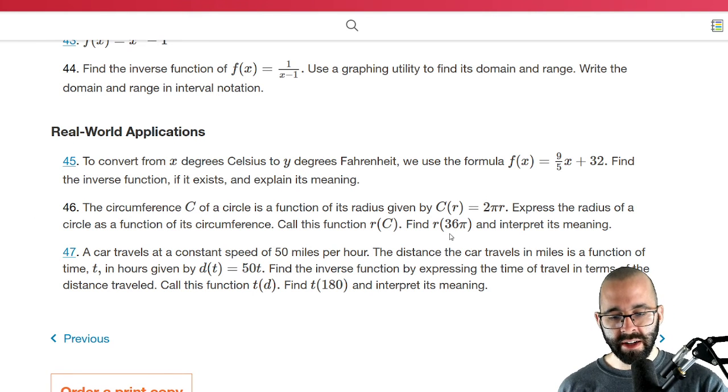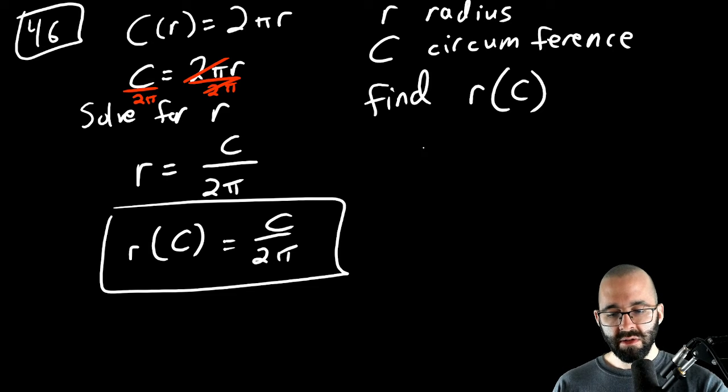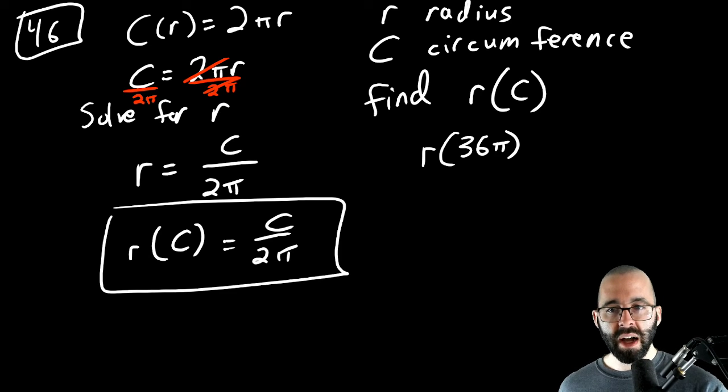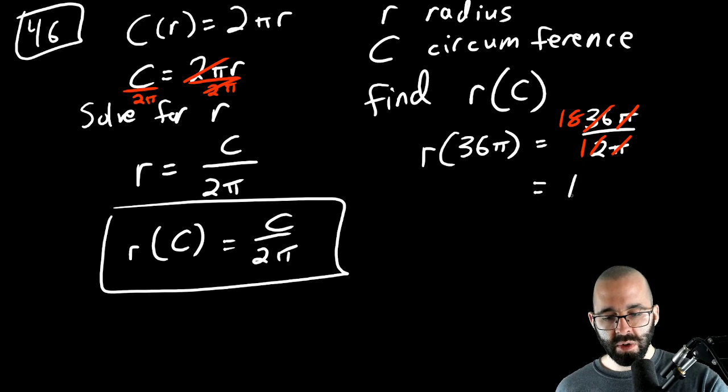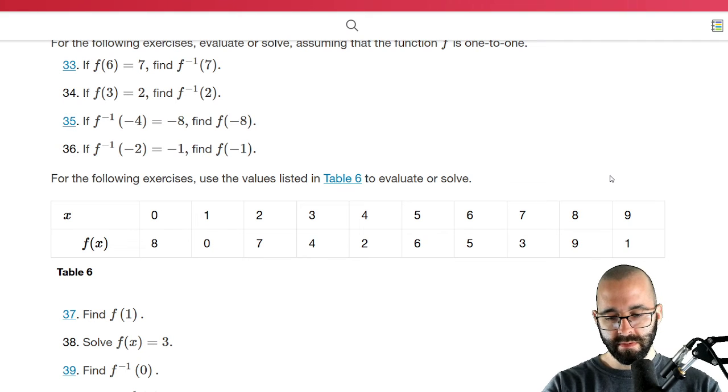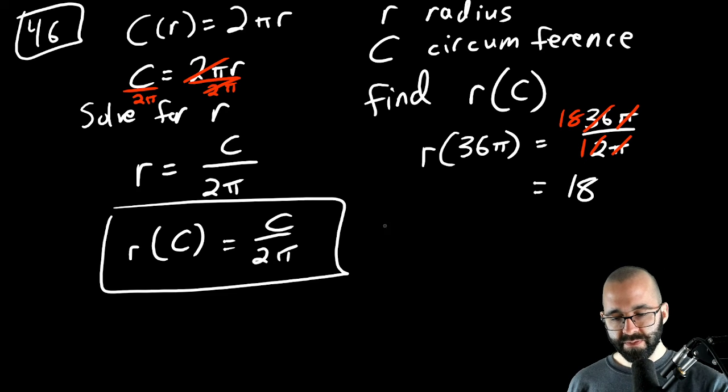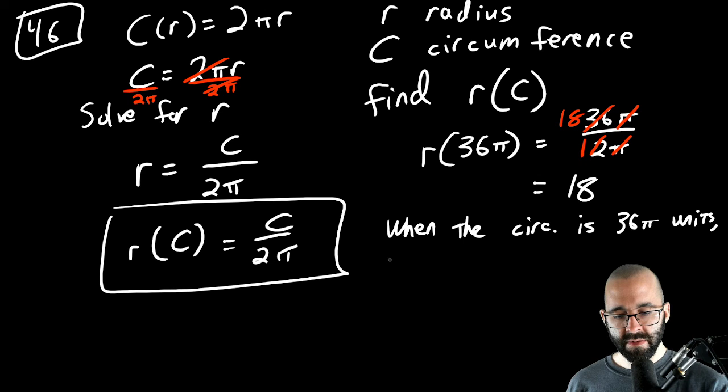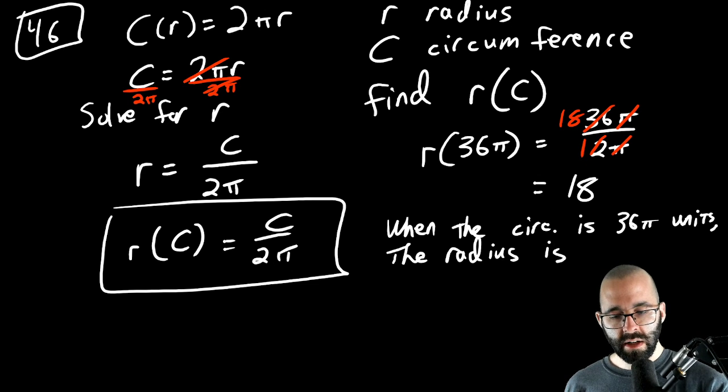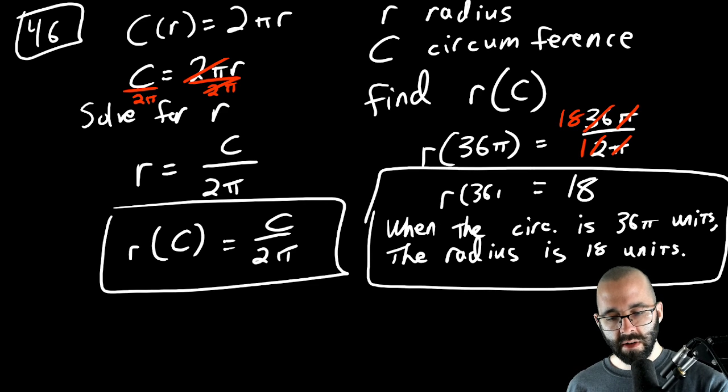The second part says find what r is when evaluated at 36π. Find r when the circumference is 36π. We just plug it in. C is now 36π. When we plug it in, we get 36π divided by 2π. The π's cancel and this becomes 18 divided by 1, which is just 18. Do they give us units here? They do not give us units. So we'll answer when the circumference is 36π units, whatever those units are. The radius is 18 units, whatever those are.